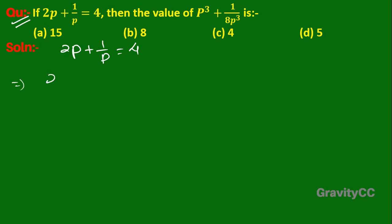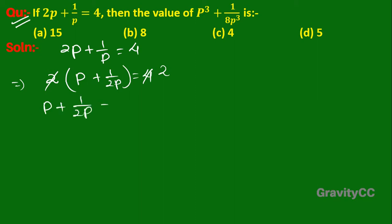We take 2 as a common factor: p + 1/(2p) = 4/2, so p + 1/(2p) = 2. Therefore, we need to find p³ + 1/(8p³).